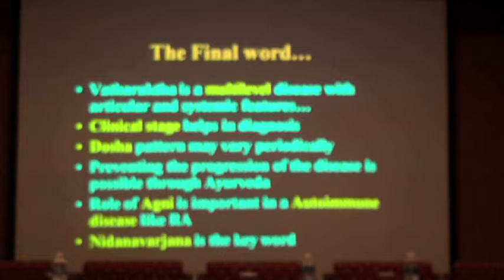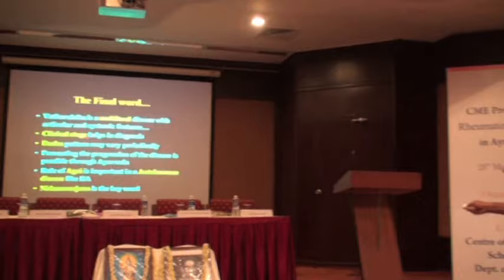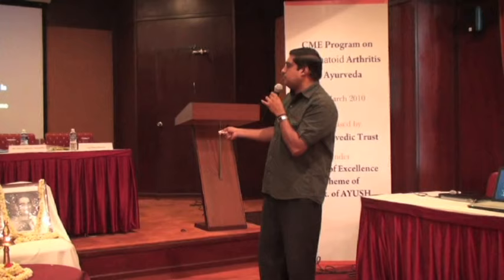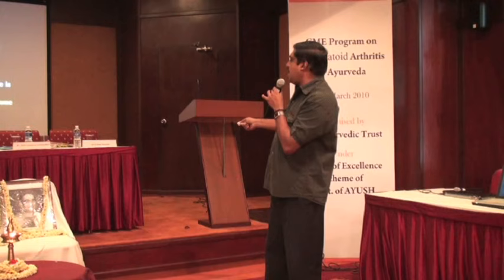Clinical stage helps the diagnosis. Don't say that all Vata Rakta will have the same rheumatoid arthritis spectrum. Clinical stage — Uttana or Gambhira — is the important thing. Dosha pattern may vary periodically. Preventing the progression of the disease is possible through Ayurveda. The role of Agni is important in autoimmune diseases like RA, so think about Agni Sameekarna drugs — I would like to use the word Agni Sameekarna immune regulators.